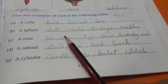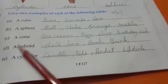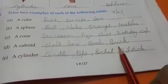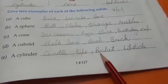Cone: ice cream, pizza slice, birthday cap. Cuboid: chalk box, book, brick. Cylinder: candle, pipe, bucket, lipstick. Ye hain aapke cylindrical shapes.